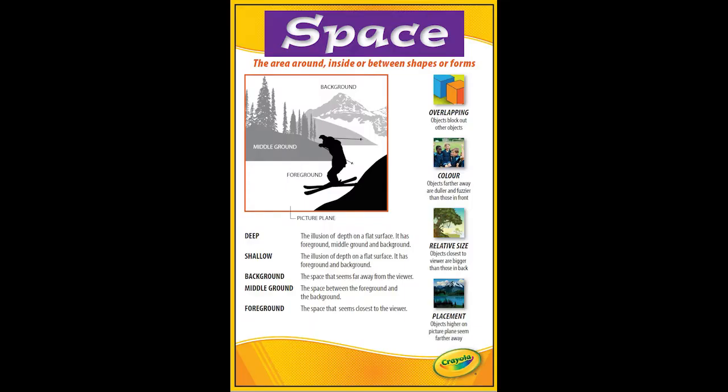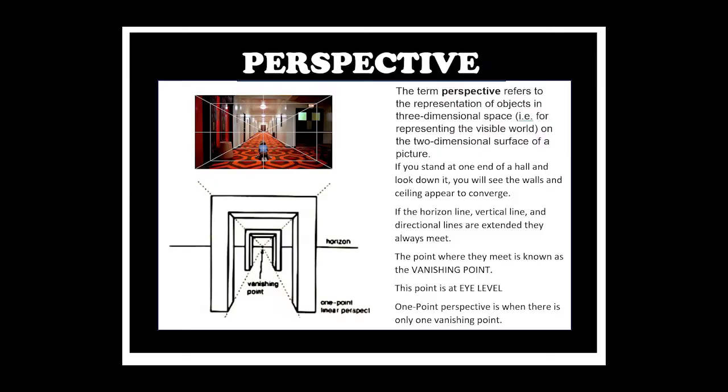Today we're talking about space, the element of art. Space is the area around, inside, or between shapes and forms. We're going to create the illusion of space on a flat piece of paper by creating a background, a foreground, and a middle ground. Other ways to create this illusion include overlapping objects, making colors fade and get duller as they get farther away, making things look bigger as they're closer to the viewer, and placing objects higher on the picture plane when they're farther away.